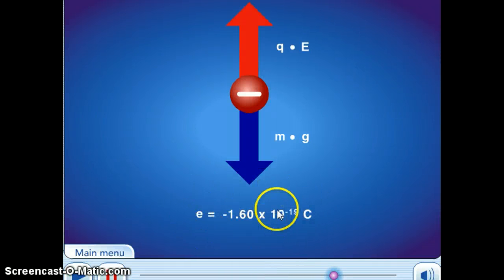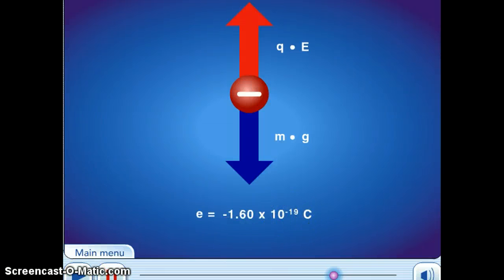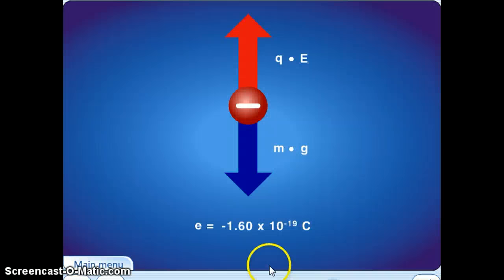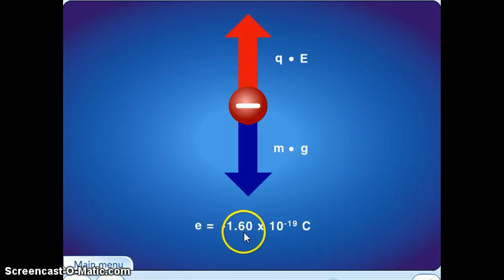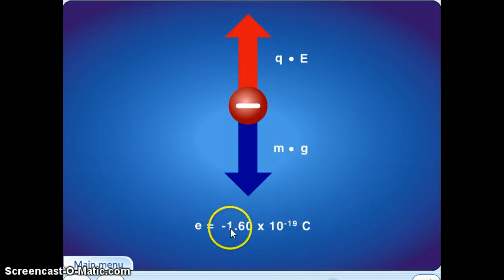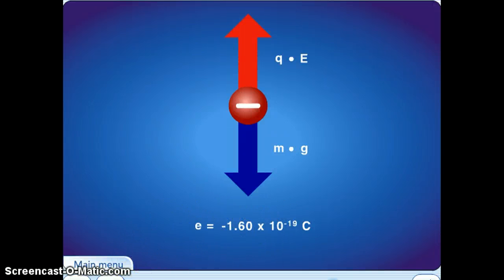Once Millikan determined that 1.6 times 10 to the minus 19 Coulombs is the charge of one single electron, he could go back to the charge-to-mass ratio that Thomson determined from his cathode ray experiment. Using the charge value and the charge-to-mass ratio, and applying dimensional analysis, you can figure out the mass of an electron. In fact, that's your homework: use the charge-to-mass ratio and Millikan's charge value to calculate the mass of a single electron.